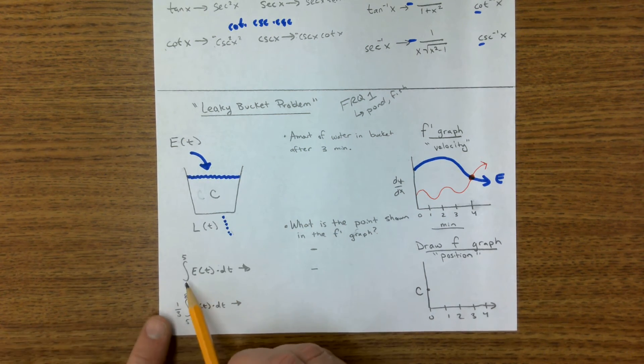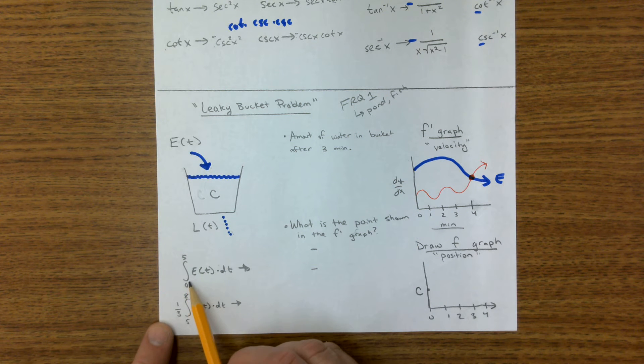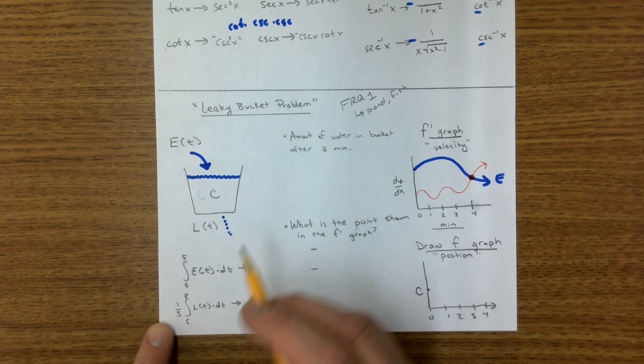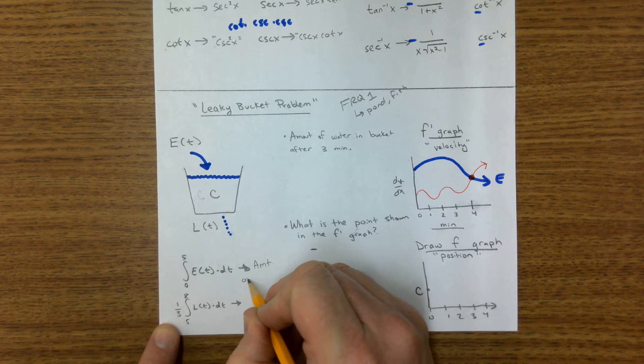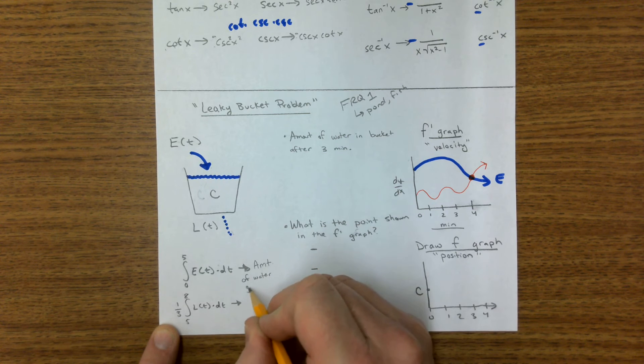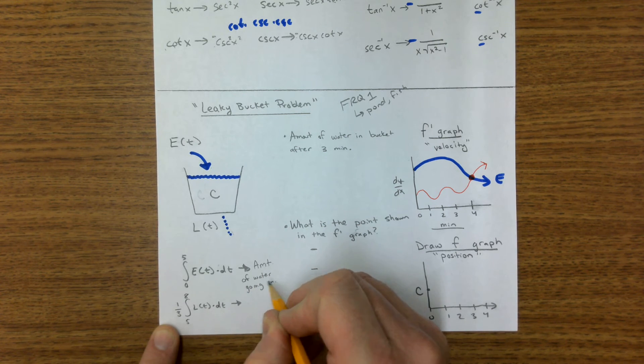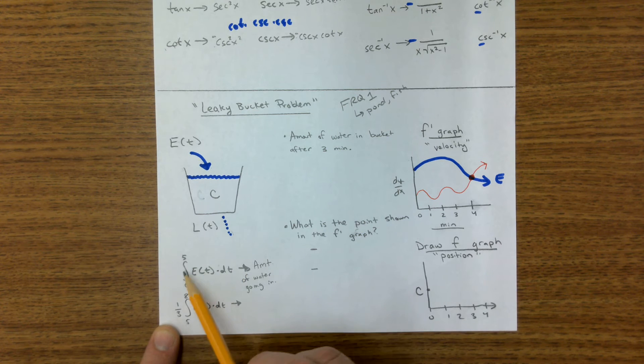All right. Well, what would this be? If I integrated from zero to five of this entering one, this would be the amount of water, amount of water going in over five hours, over this five hour period. That's the amount of water going in.